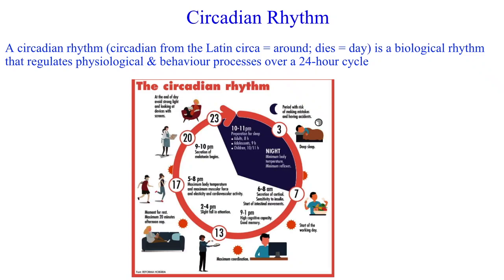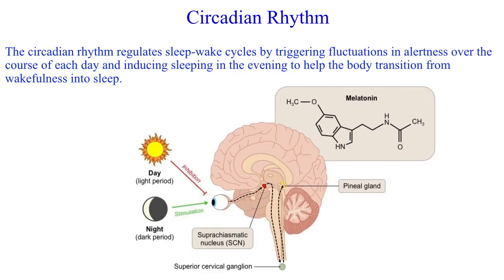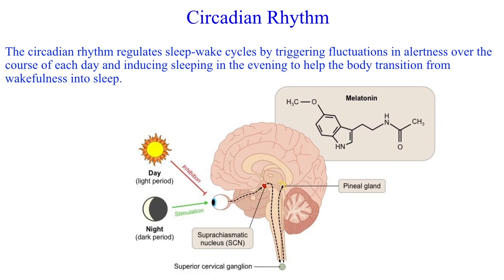Before going into the specifics of circadian rhythm phase disorder, here is an overview of how the circadian rhythm influences the sleep-wake cycle. Starting with the definition: circadian rhythm, derived from the Latin meaning 'around a day', refers to a biological process that regulates physiological and behavioral processes such as hunger, thirst, alertness, when we wake, and when we sleep, over a 24-hour cycle. The circadian rhythm basically represents our body clock, regulated by both internal and external mechanisms.